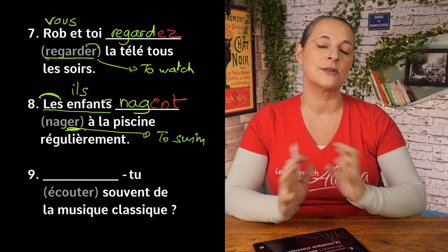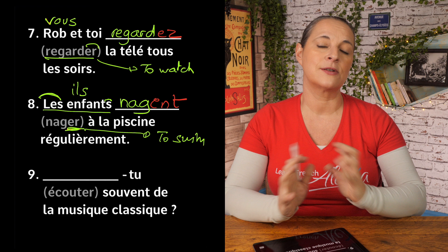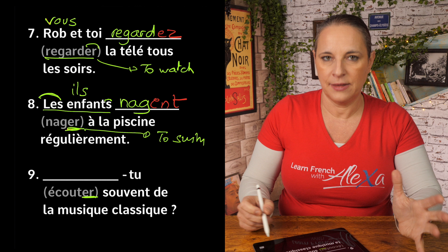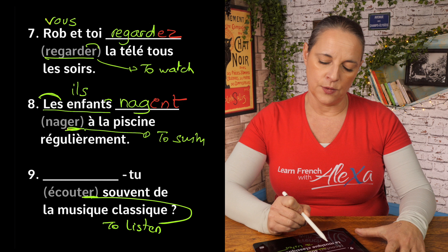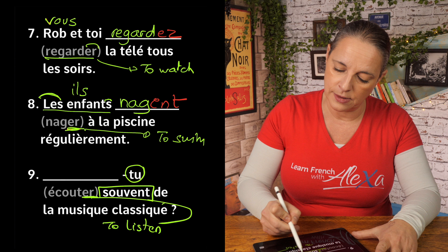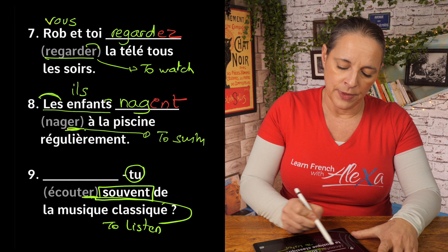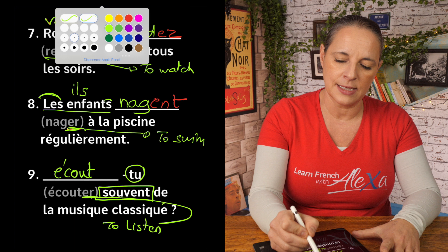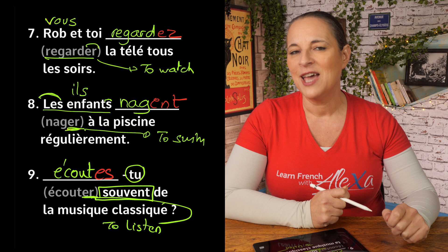Number nine is a question. The verb is écouter — an infinitive meaning to listen. The subject is tu, and we want to ask: do you often listen to classical music? We start with the verb because it's a question. The ending for tu is ES: tu écoutes. Tu écoutes souvent la musique classique?